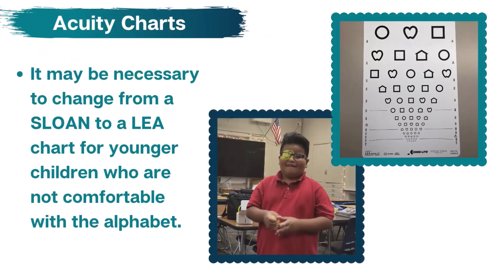During the screening, you may discover that a child is less comfortable with the letter chart. To get an accurate screening, switch to the LEA symbols chart. You may need to review the item names beforehand to ensure consistent screening. Children can name the optotypes with any name they are comfortable with — for example, the LEA chart square symbol may be called a box by some children.